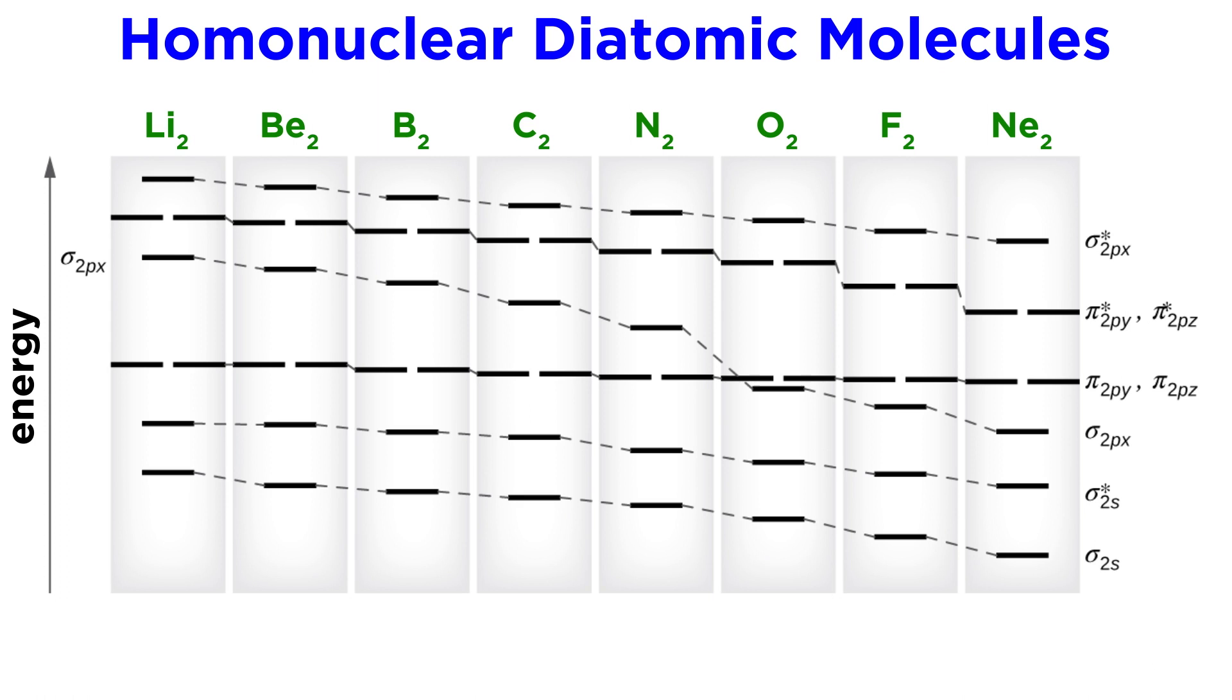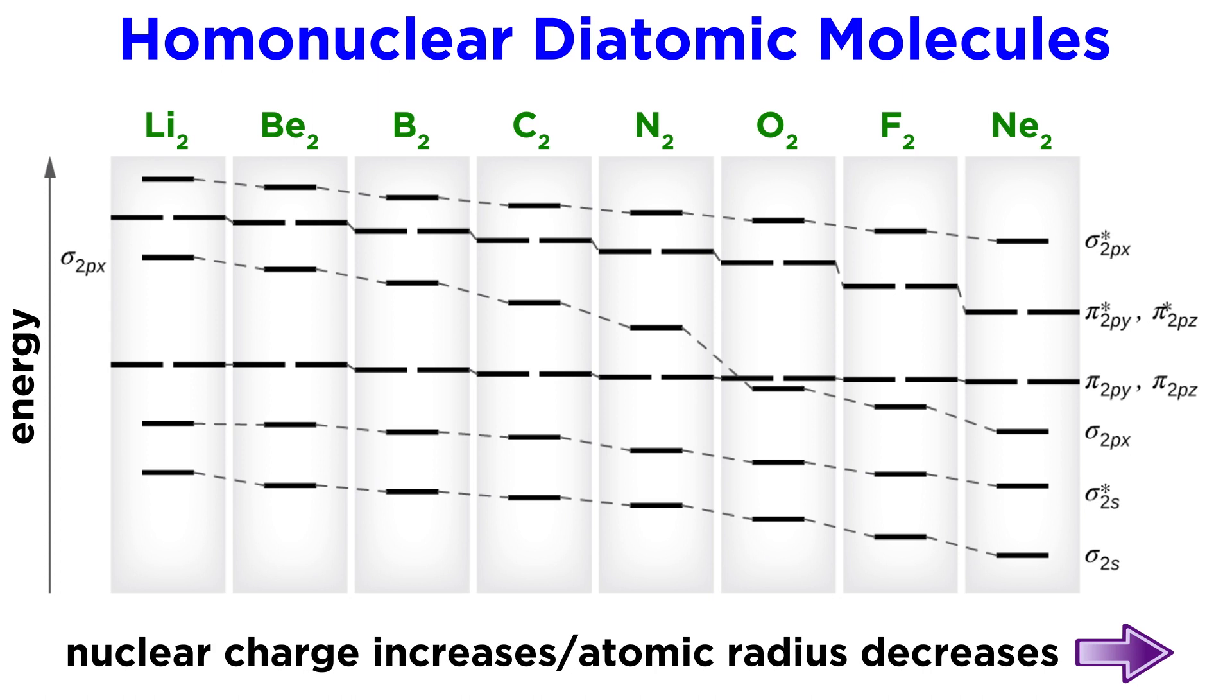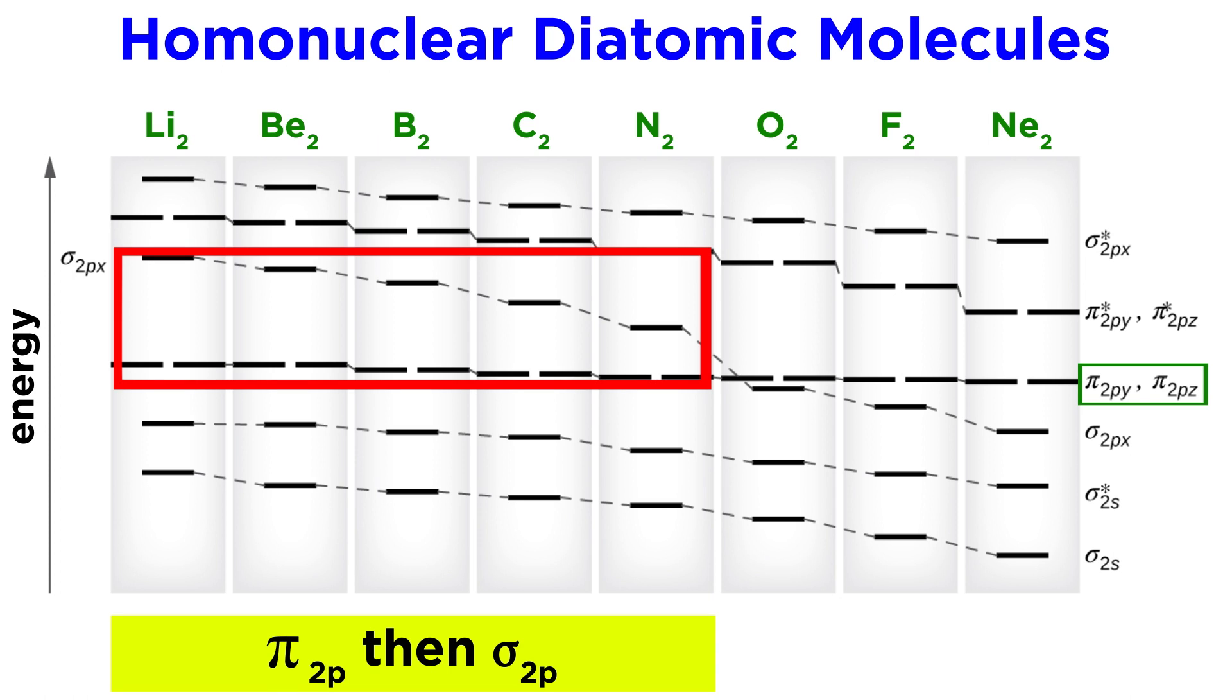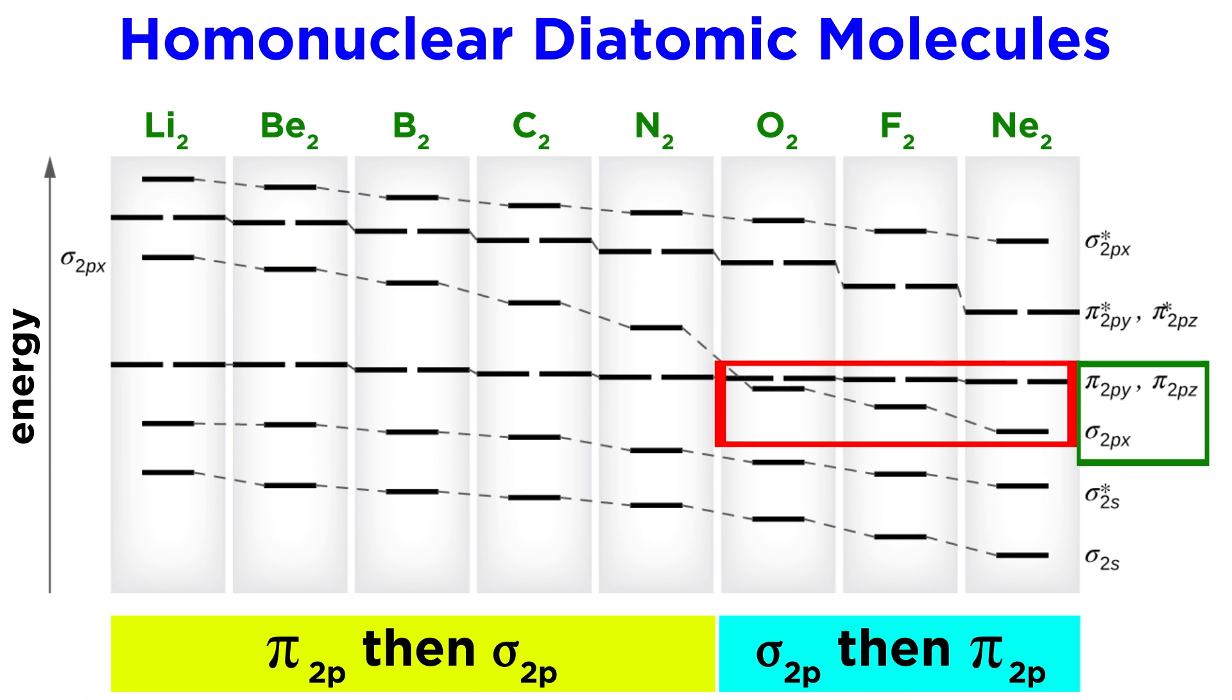This depicts the relevant orbital energies for all the potential homonuclear diatomic molecules in the second period, from lithium to neon. As we go to the right in the period, effective nuclear charge increases, so the atomic radii contract, and the orbitals get lower in energy. On the left, the pi-2p bonding orbitals are lower in energy than the sigma-2p bonding orbital.